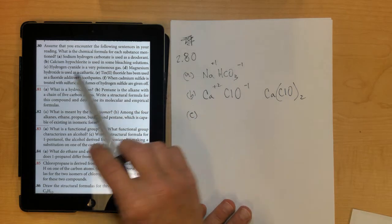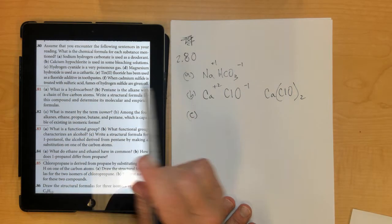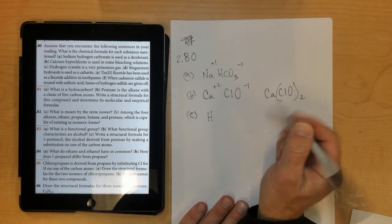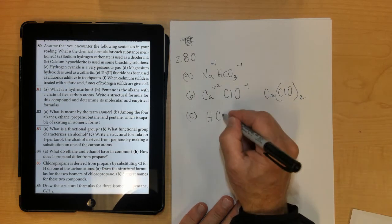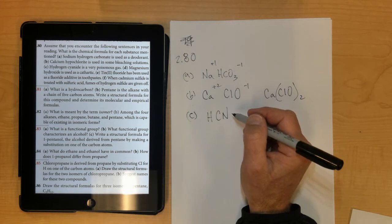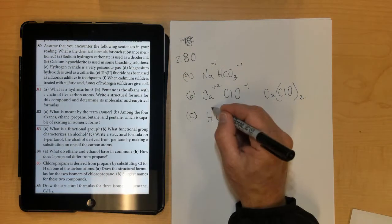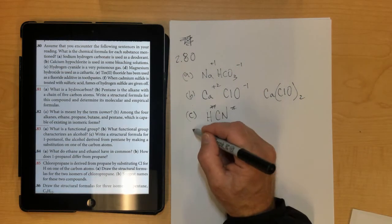Letter C, hydrogen cyanide is a very poisonous gas, so that's hydrogen, and then cyanide is just a polyatomic ion, that's CN. If you look it up on the back here, you'll find out that cyanide is negative 1, and hydrogen is positive 1, so that's the formula.